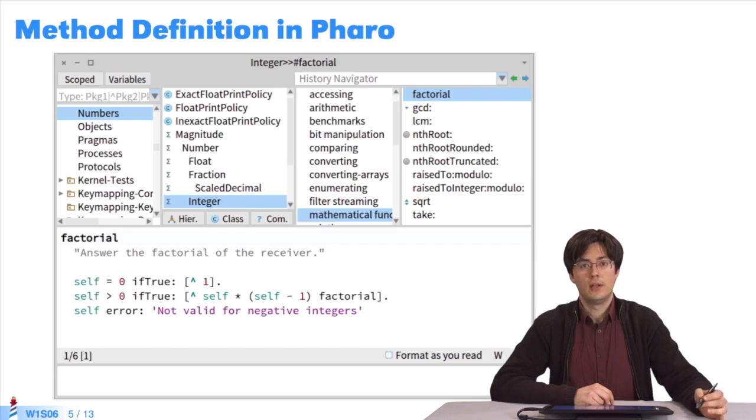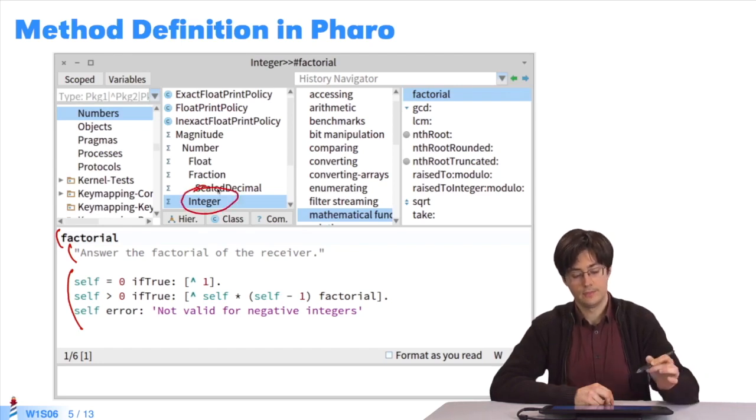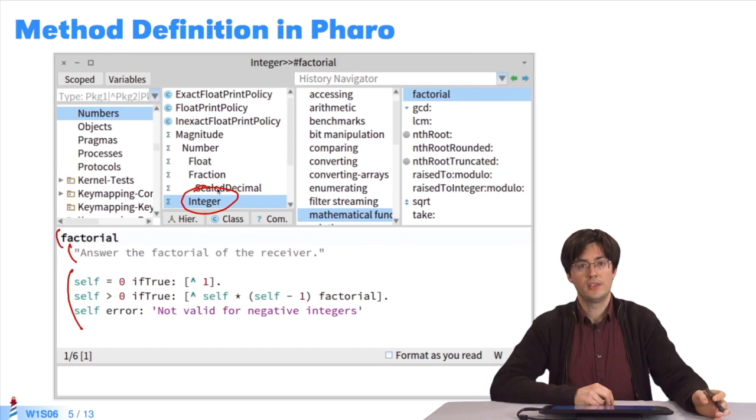As for the method definition, we have, still in the bottom part, the name of the method, a comment, and the method's code. And the method belongs to a class. In the syntax to define the method, we have no information about the class to which the method should belong. In fact, it's the selection of the class in the code browser which tells us the class to which the method belongs.